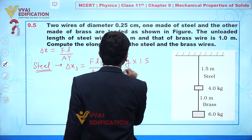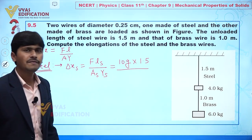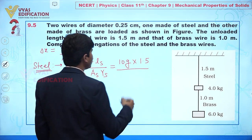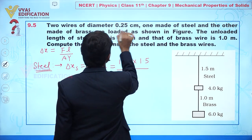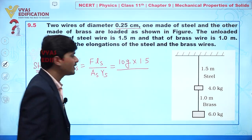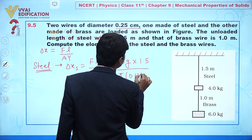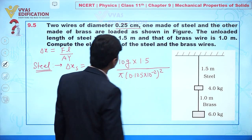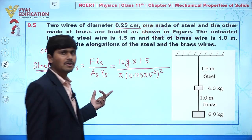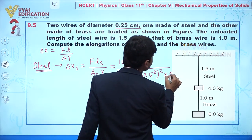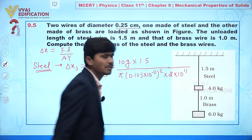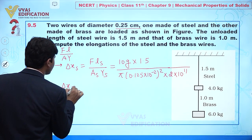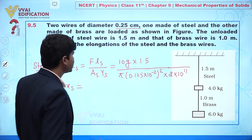The length of the steel wire is given as 1.5 meters. For the cross-sectional area of the steel wire, the diameter is given so we write it as π times r squared, where r equals 1.25 times 10 to the power minus 2 meters. The Young's modulus of steel is 2 times 10 to the power 11 Newton per meter squared.